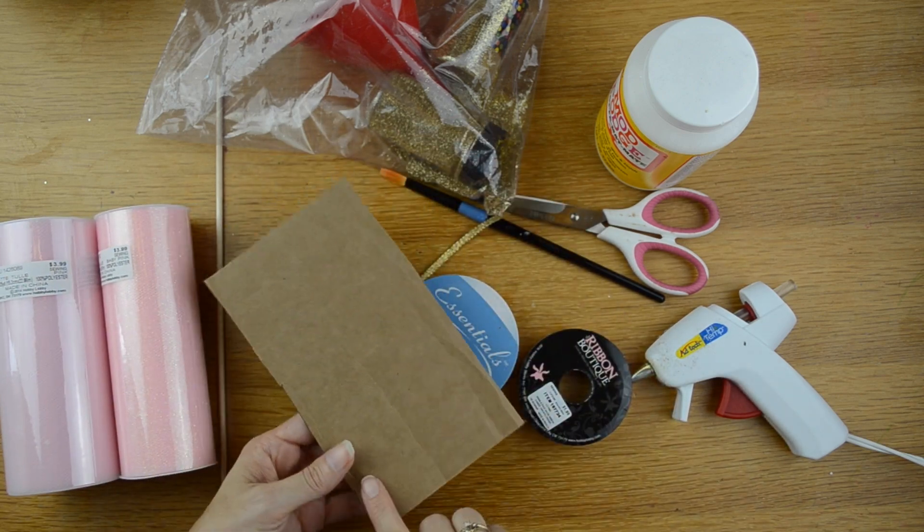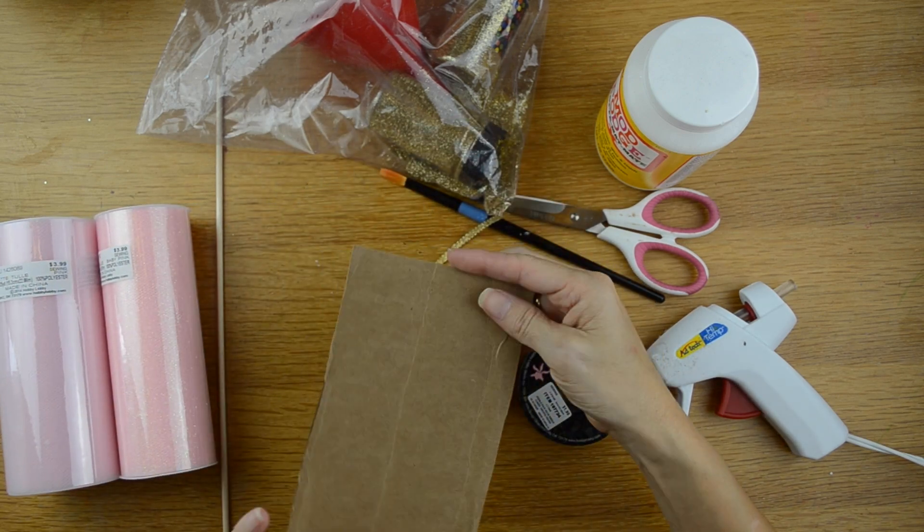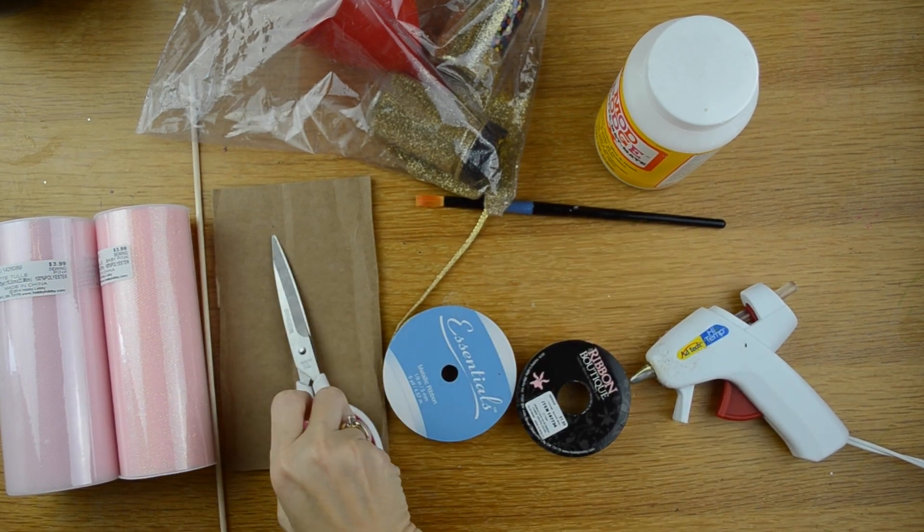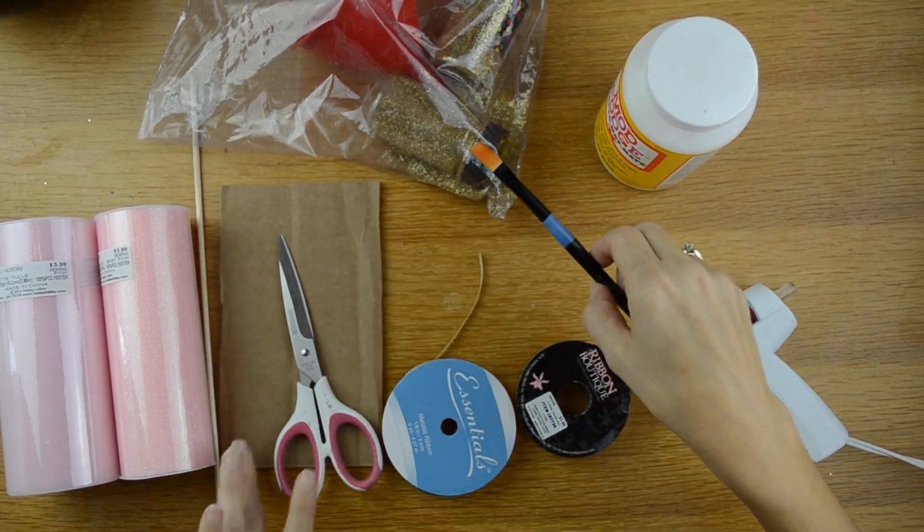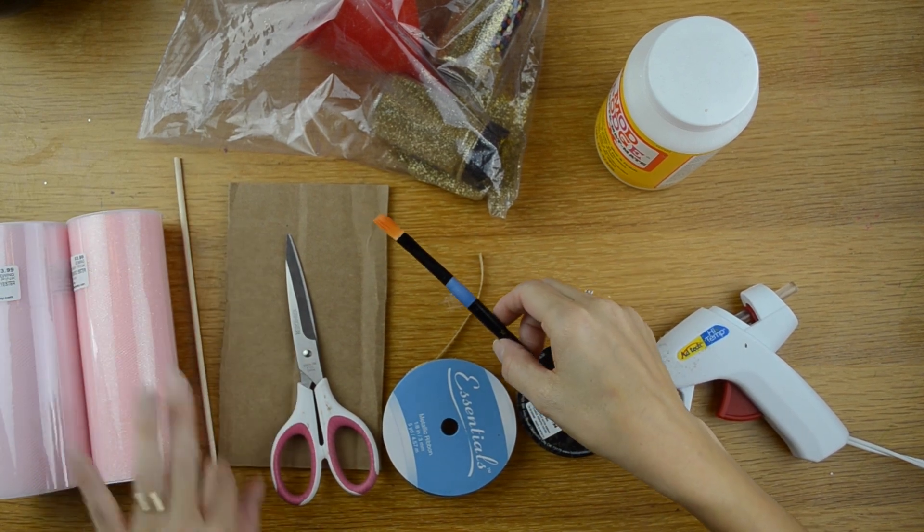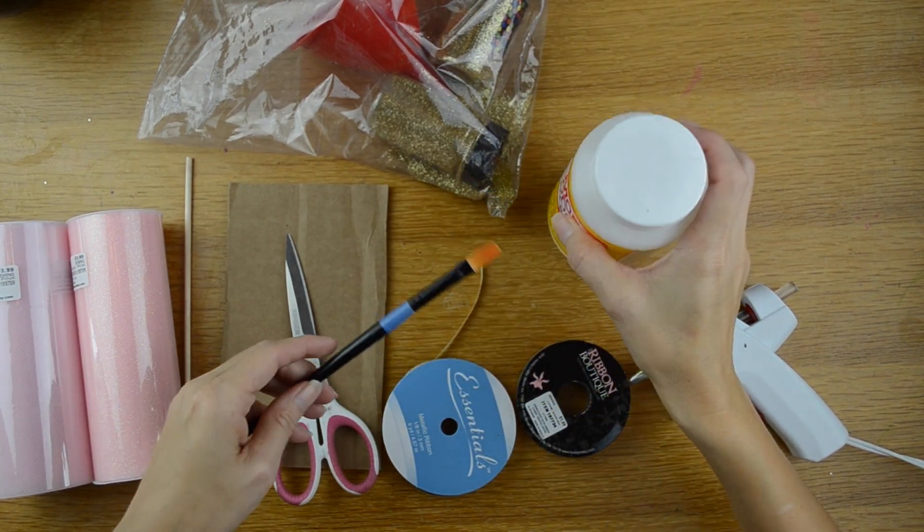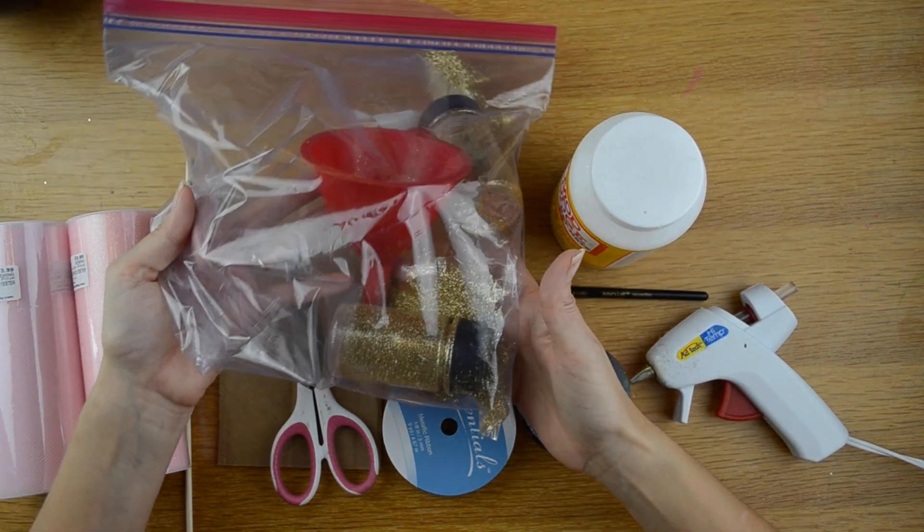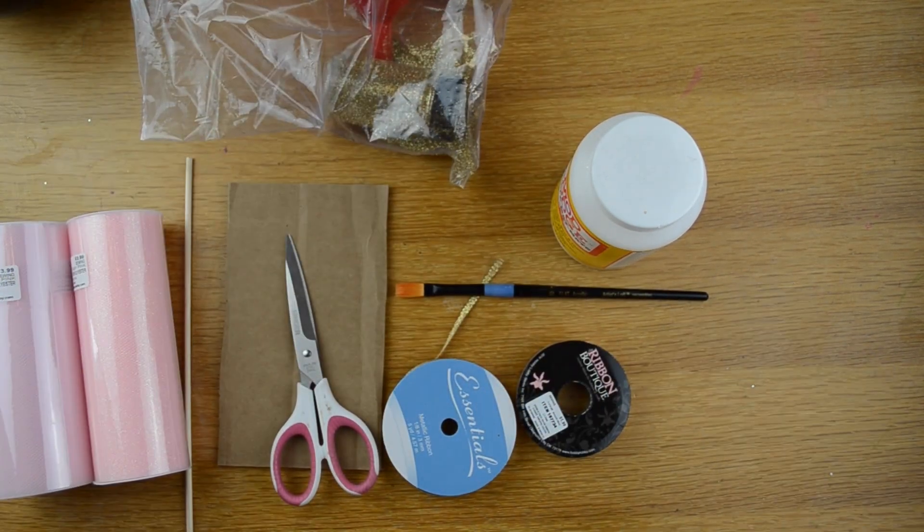Also, you're going to need a piece of cardboard. You really don't need to worry so much about the length of it, but the width is 4 inches. You're going to need scissors. And to paint the dowel rod with the glitter, I'm using Mod Podge and you're going to need a paintbrush and I am using a gold glitter.